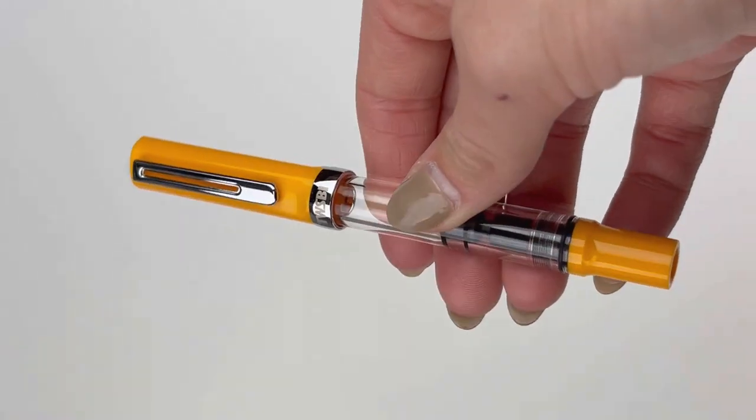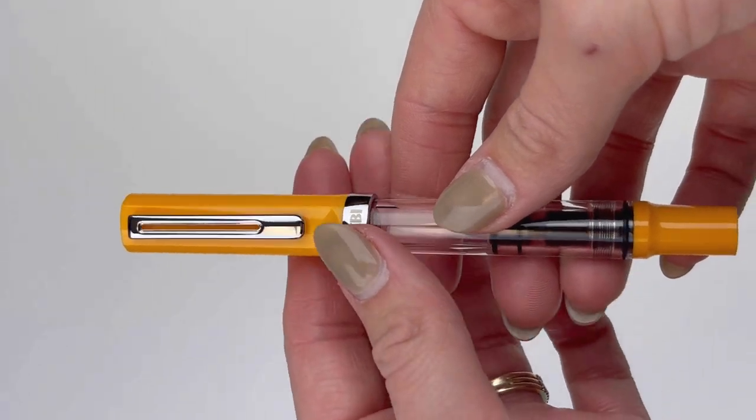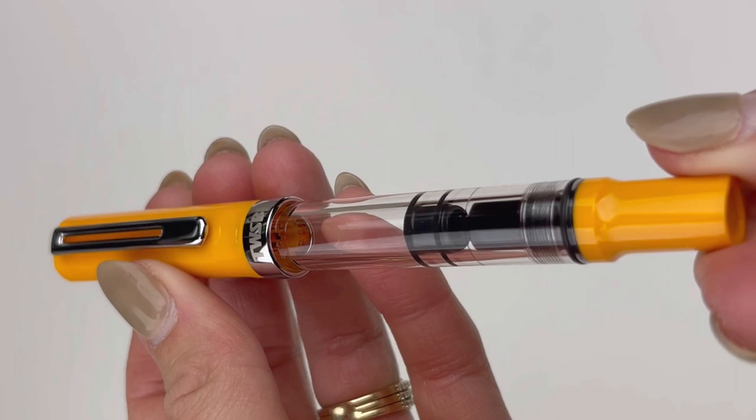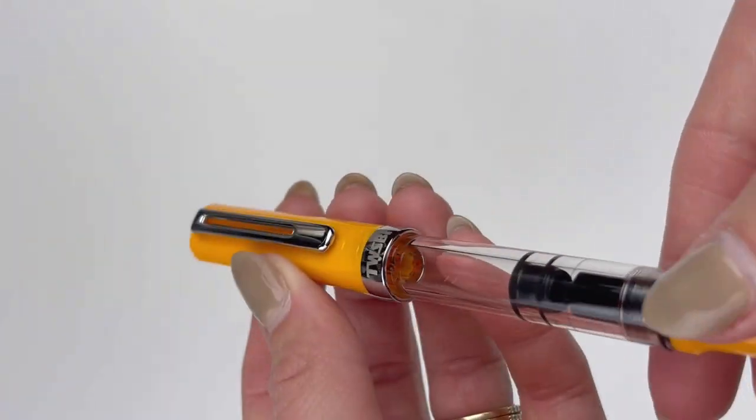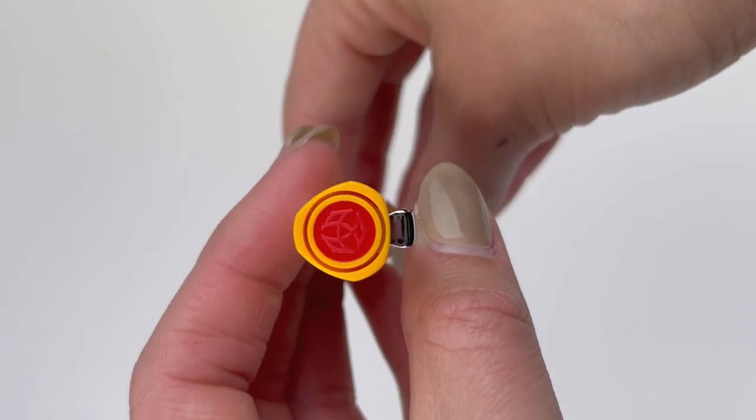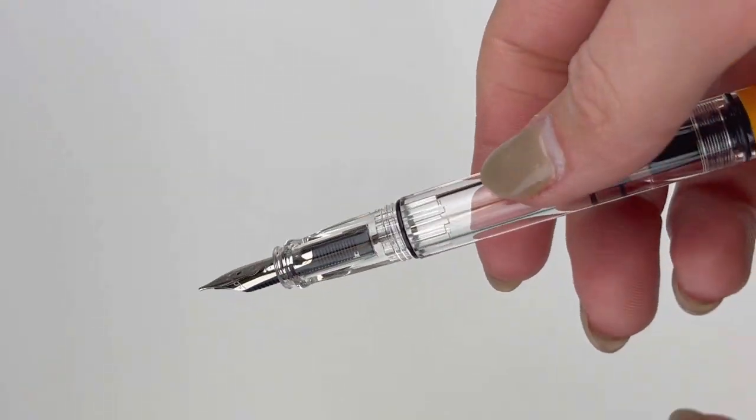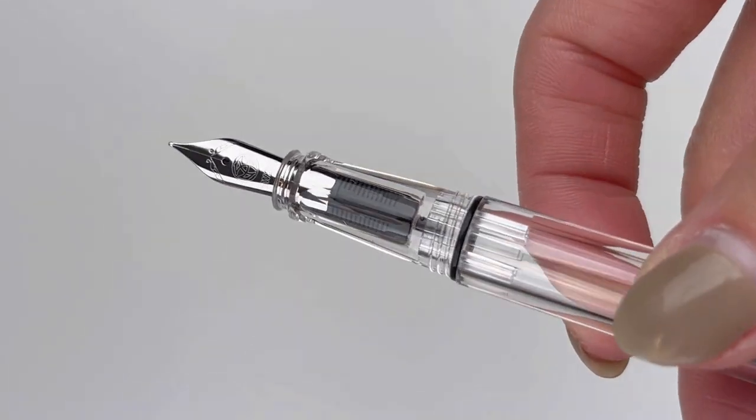Here is a look at this. You've got your warning label there clipped underneath the pen clip. You have the traditional TWSBI design. This is the Eco-T. It has silver trim with that yellowy orange resin for the cap and the piston knob, and then the clear transparent material for the rest of the pen.